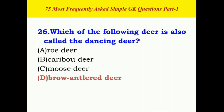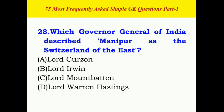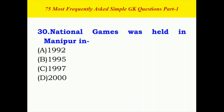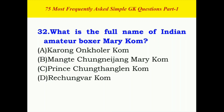The correct answer is D. Hongkong Jai is also known as — the correct answer is D. Which Governor General of India described Manipur as the Switzerland of the East? The correct answer is B. National Sports University is established — the correct answer is B. National Games was held in Manipur — the correct answer is C.